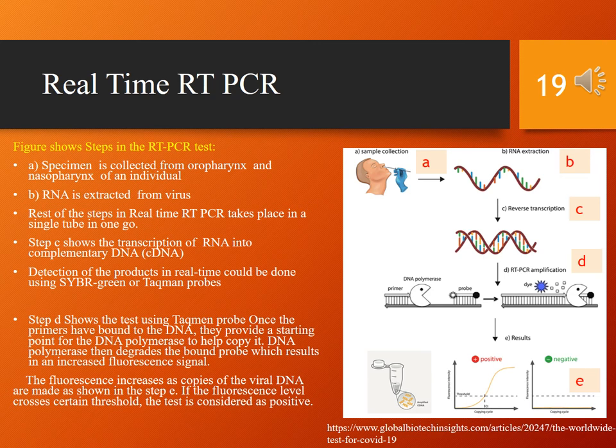Detection of products in real-time can be done using SYBR green or Taqman probes. Step D shows the test using Taqman probes: once the primers have bound to the DNA, they provide a starting point for the DNA polymerase to help copy it.